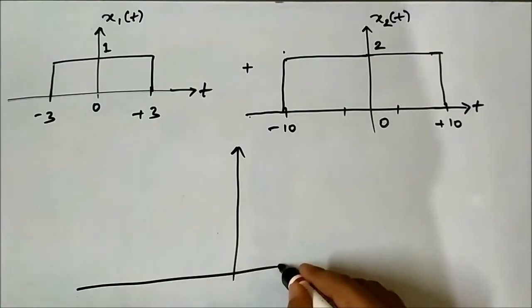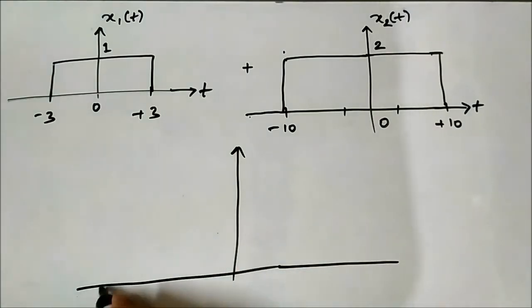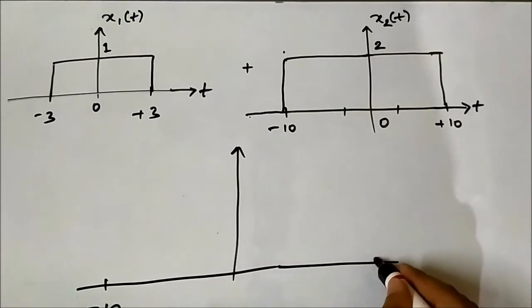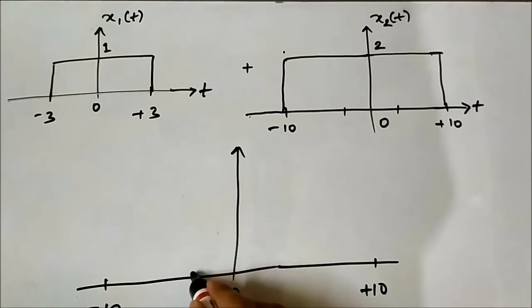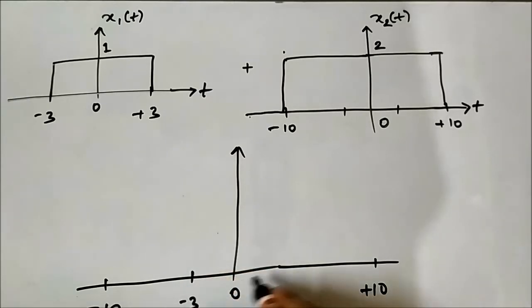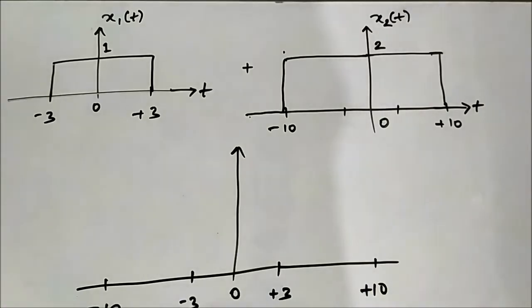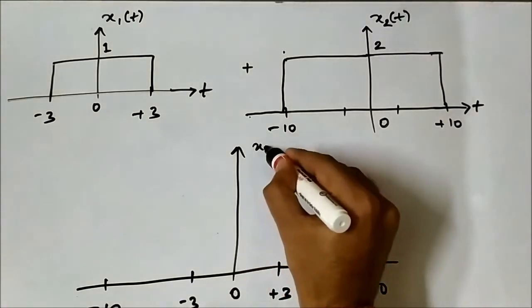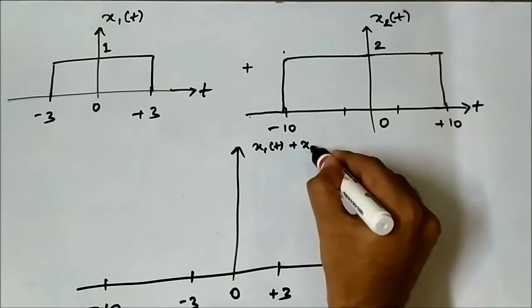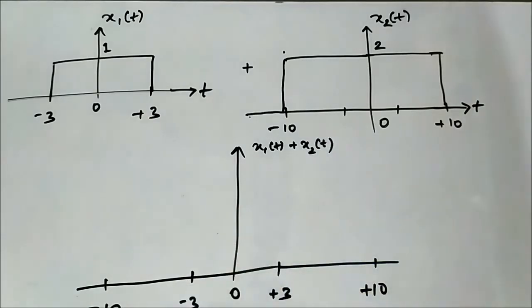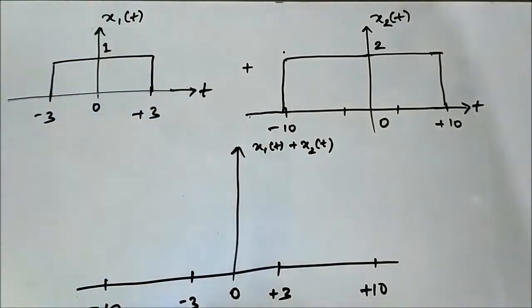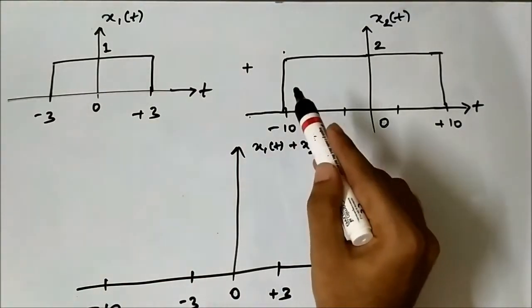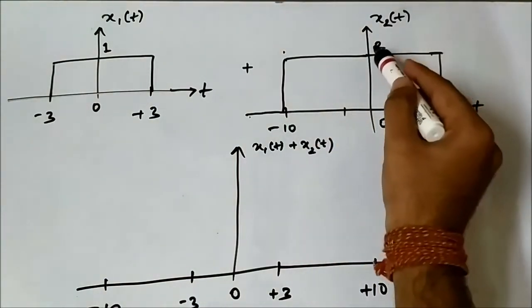For the addition x1(t) plus x2(t), the duration will be from minus 10 to plus 10. The important points are minus 3 and plus 3. In between minus 3 and plus 3, the signal x1(t) exists with amplitude 1, and x2(t) exists from minus 10 to plus 10 with amplitude 2.